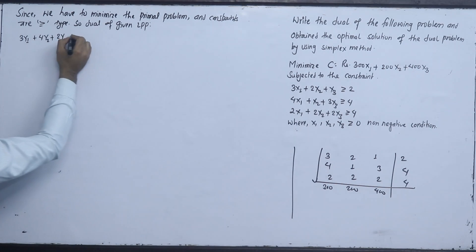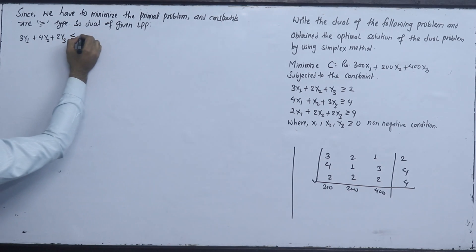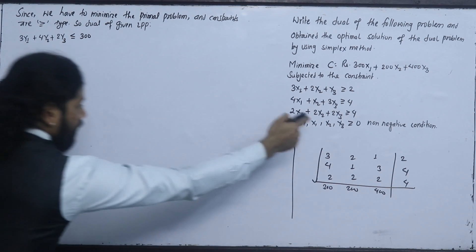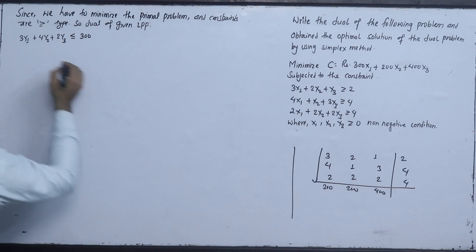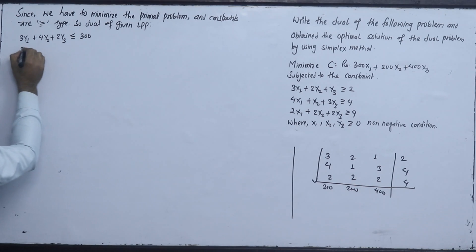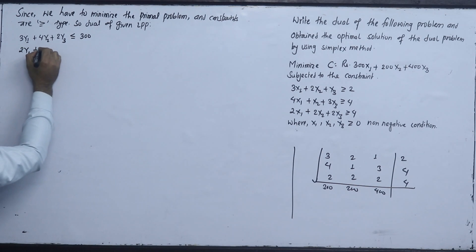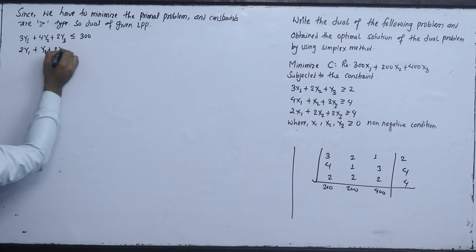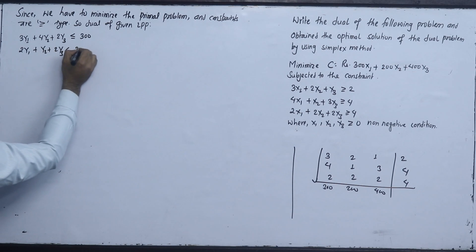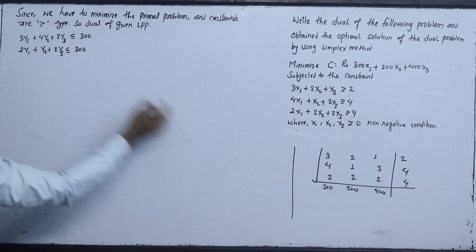Now we have to maximize, and the second constraint is 2y1 plus y2 plus 2y3 is less than or equal to 200.